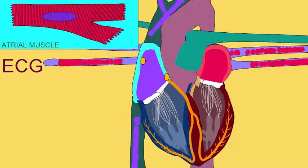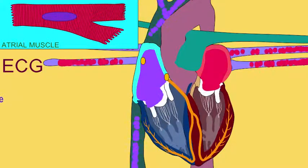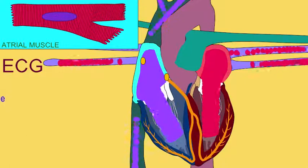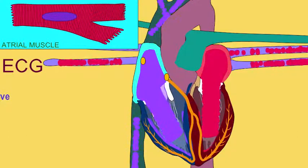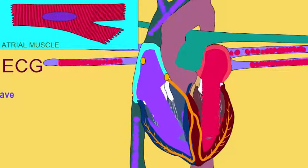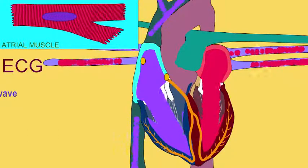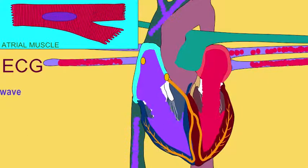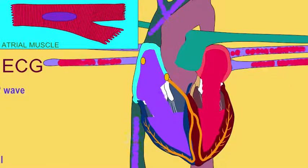When the AV valves open, the ventricles begin to fill as blood rushes from the atria into the ventricles. This ventricular filling is passive in that the atrial cardiac muscle is not contracting yet, and it occurs very rapidly at first and then slows.